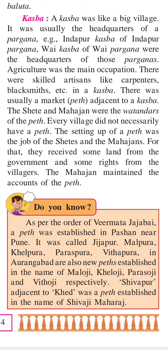These Kasbahs were the headquarters of their respective Paraganas, and agriculture was the main occupation. The people depended on agriculture, but there were also skilled artisans like carpenters and blacksmiths working in the Kasbah.